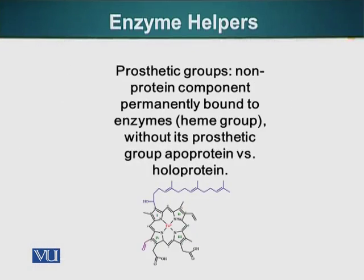Prosthetic groups are non-protein components permanently bound to enzymes. Heme is an example — see the structure of heme on the screen. Without its prosthetic group, the protein is called the apoprotein. Whereas when the prosthetic group is attached to the enzyme, it is called the holoprotein.